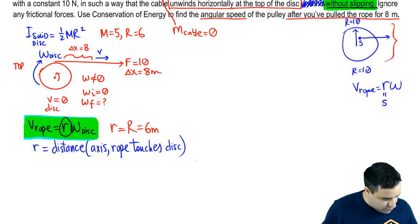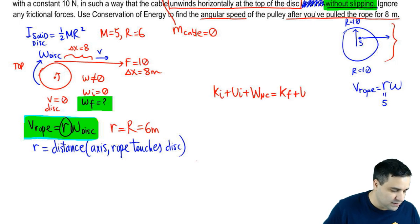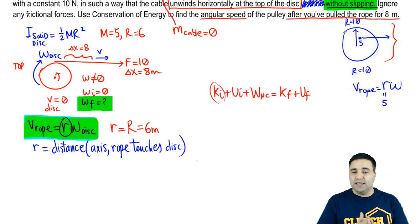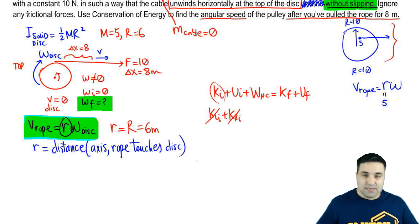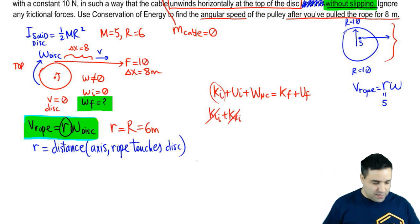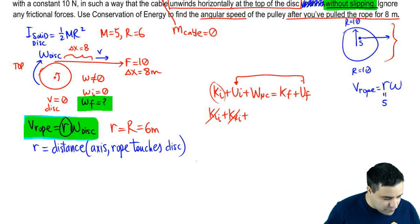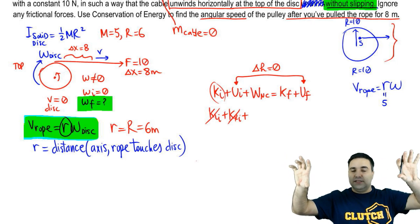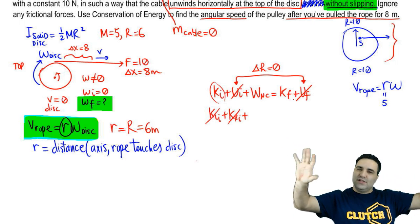Using conservation of energy and looking for omega final: K initial + U initial + W_non-conservative = K final + U final. There's no initial kinetic energy because the disk isn't spinning and doesn't move sideways. There's no change in potential energy because the disk keeps the same height—delta h is zero—so U initial and U final cancel out.